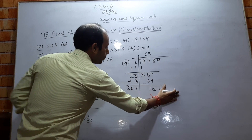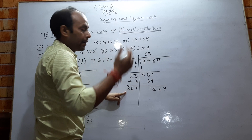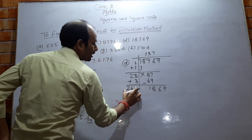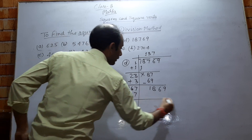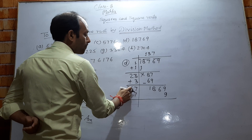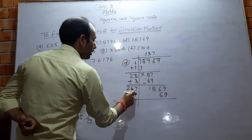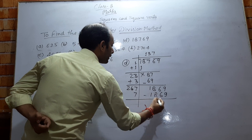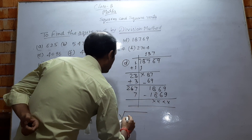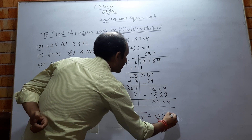Working through the steps: 3 squared is 9, 7 squared is 49. We try 7: 267 multiplied by 7 gives 1869. Subtracting, we get remainder 0. So the square root of 18769 is 137.